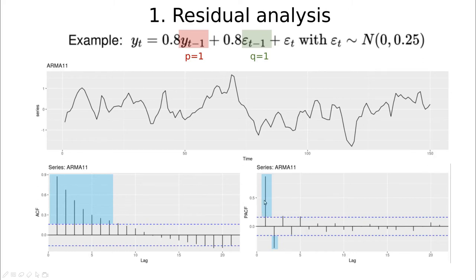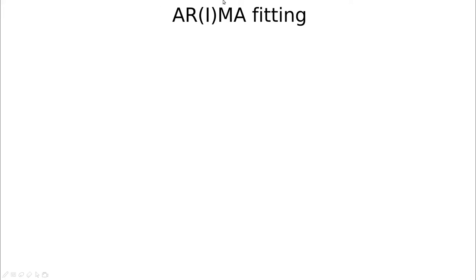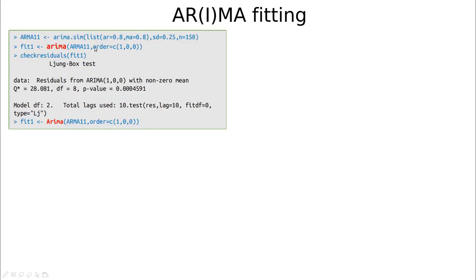And then you have a couple of bars there, which is not what we would expect, because here we have q equals one and then we see a couple of bars there. As you can see, simple model identification is not very robust. The best thing we can do is try some fittings, generate new processes with the original data, and check some diagnostics to evaluate those parameters.